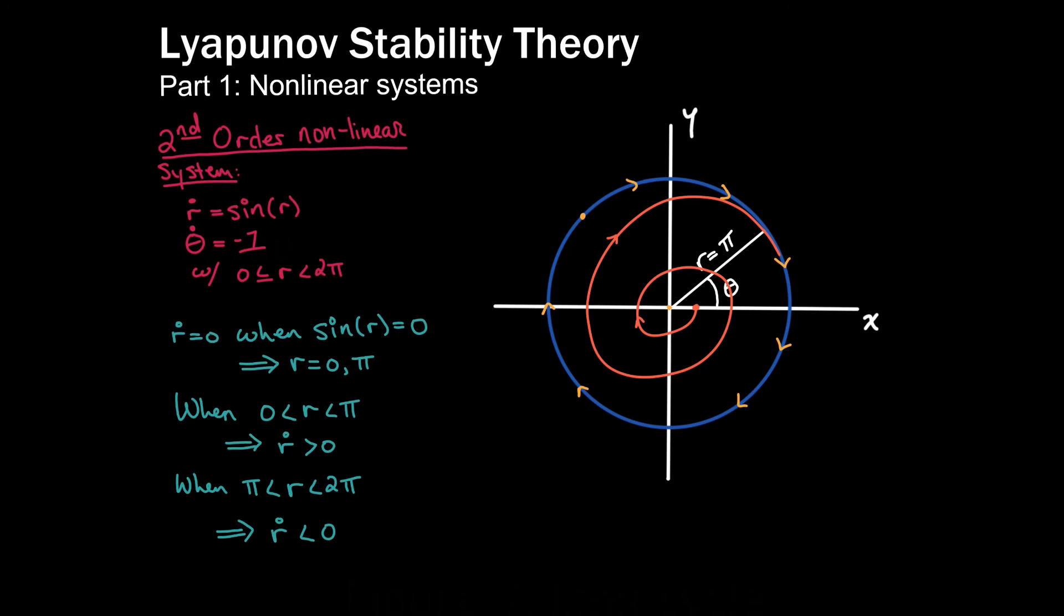On the other hand, if I start outside of this circle of radius pi, we know that down here that my radius is going to be decreasing. So, I'm going to be pulled towards this invariant set. And this happens no matter where I start out here with radius greater than pi.